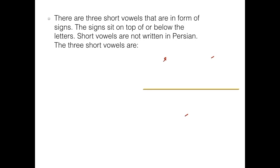There are three short vowels that are in the form of signs. The signs sit on top of or below the letters. Short vowels are not written in Persian.